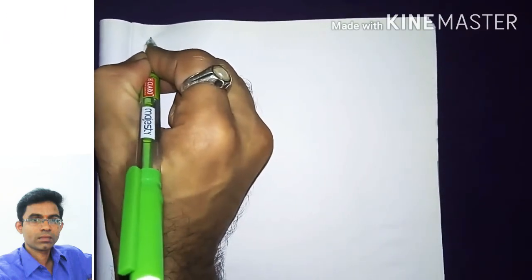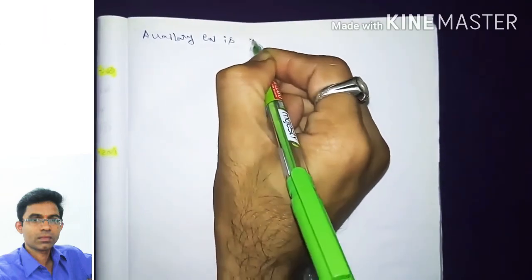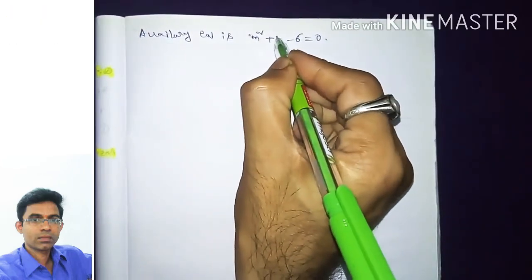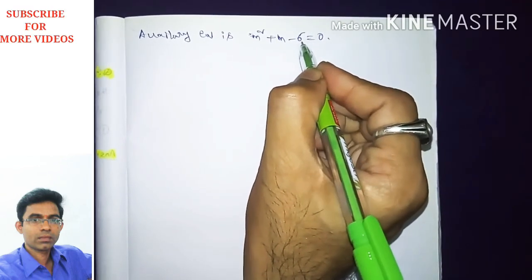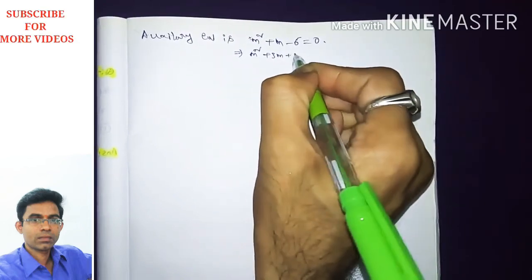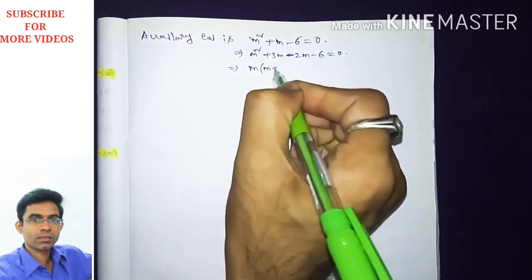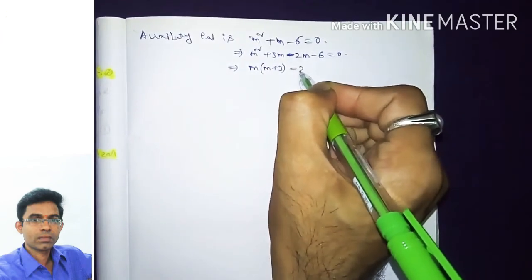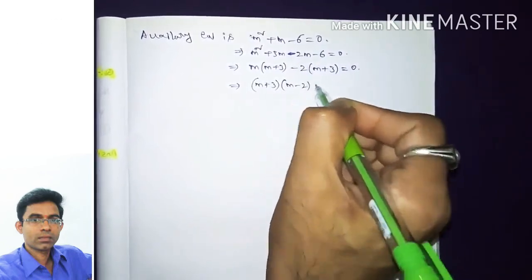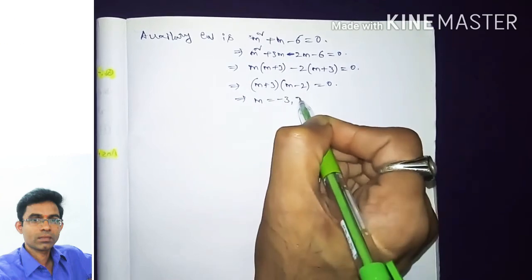The auxiliary equation is m² + m − 6 = 0. Factorizing: (m + 3)(m − 2) = 0, giving roots m = −3 and m = 2, which are real and distinct.